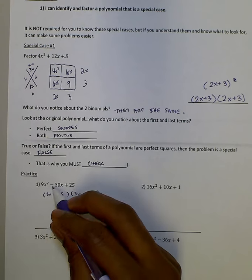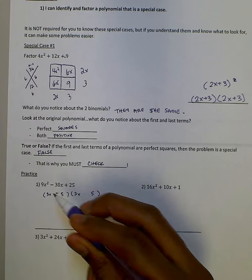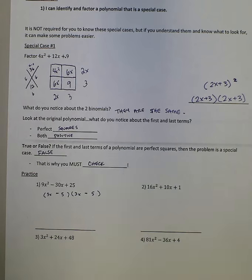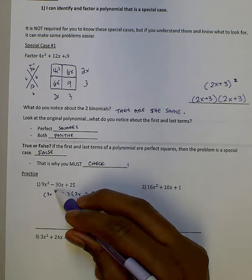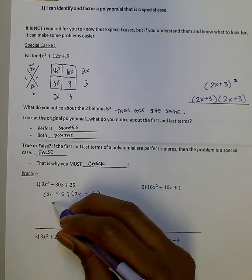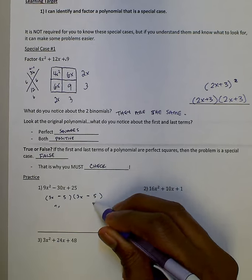Now this middle term is negative. So I'd say, okay, let's say that means this has to be negative. So then we could multiply this out and check. 3x squared is 9x squared, we know that. We know this is going to be positive 25.